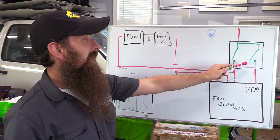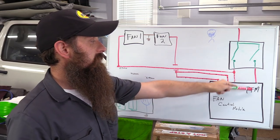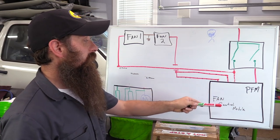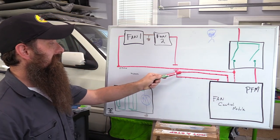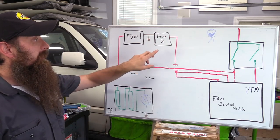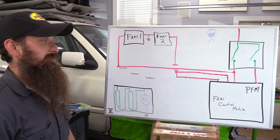For the next fan speed, as our thermal switch sees that next temperature threshold, it closes, sends power to the fan control module. Fan control module then says, hey, here's some power, sends it out down to our fan two. So now on speed two, fan one is running and fan two is running.